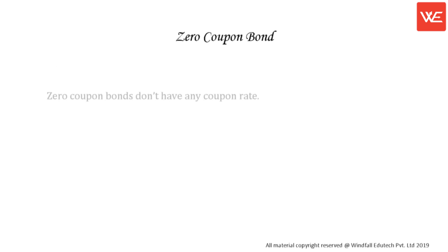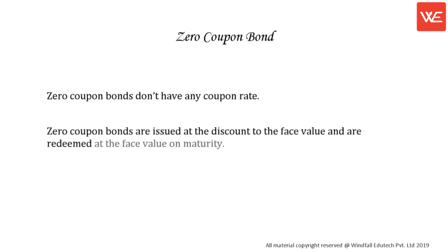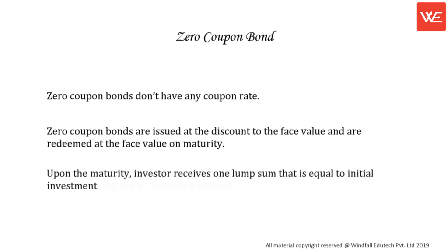Zero Coupon Bond. Zero coupon bonds don't have any coupon rate. They are issued at a discount to the face value and are redeemed at the face value on maturity. Upon maturity, the investor receives one lump sum that is equal to the initial investment plus the accumulated interest.